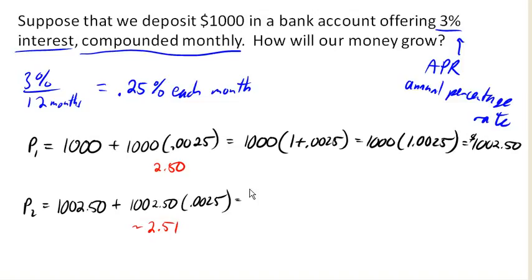We could factor out the 1,002.50 here, leaving me with 1,000 times 1.0025, and I end up with $1,005 and a penny. So I've earned a little bit more money this time.